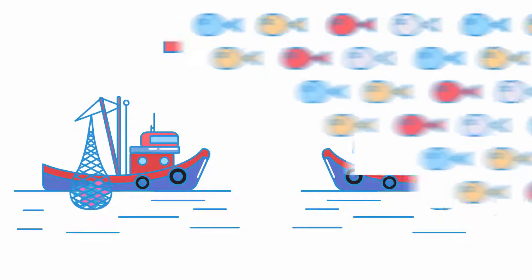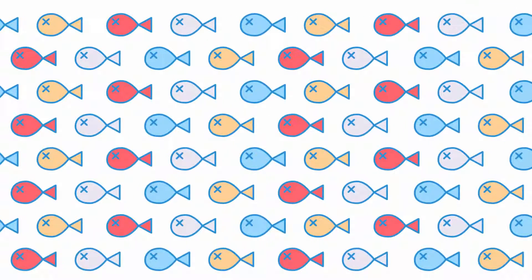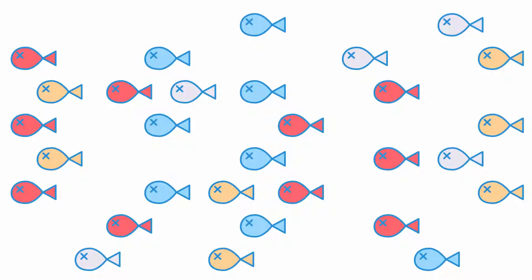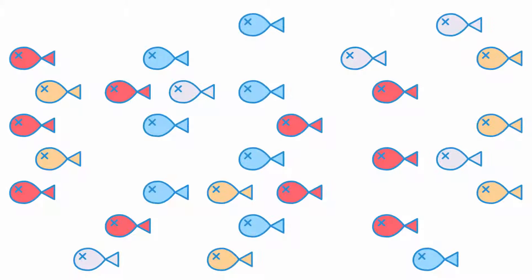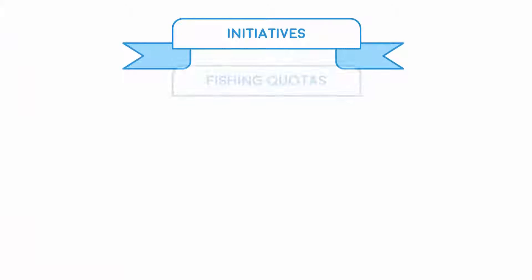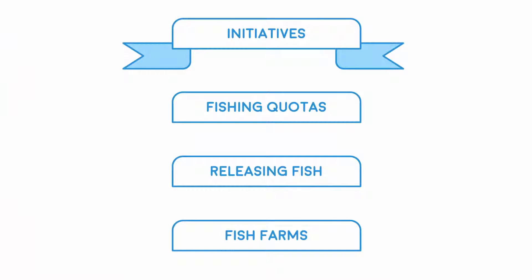Unsurprisingly, the number of some species of fish in the wild are declining because of overfishing. We're taking fish from the sea faster than populations can reproduce. Some species of fish are endangered because of this and might go extinct if their populations continue to fall.